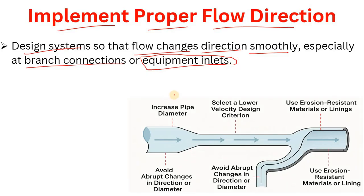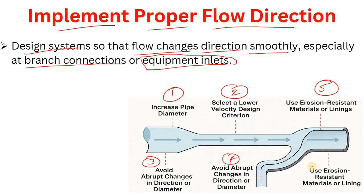In this video we discussed six methods to reduce erosional velocity: (1) increase pipe diameter, (2) select a lower velocity design criteria, (3) avoid abrupt changes in direction or diameter, (4) use erosion-resistant materials or linings, (5) control solid content, and (6) use flow conditioners and implement proper flow direction. I hope you understood what erosional velocity is, why it matters, and how you can reduce it. If you have any doubts, please leave them in the comments. Thanks for watching — keep learning!